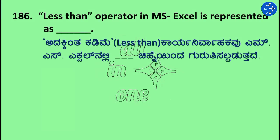Question: Less than operator in MS Excel is represented as dash. Options: Less than (<), More than (>), Less than equal (<=), More than equal (>=). Right answer is Less than (<).